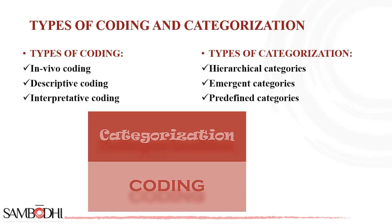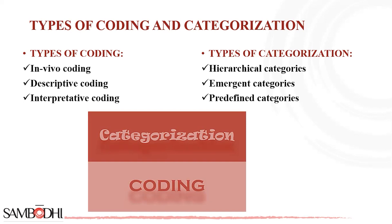Use interpretative coding when you want to understand subjective perspectives — if your research aims to capture the subjective perspectives, meanings and interpretations of participants. When emphasizing context and culture, this coding allows you to consider the broader social, cultural and historical context in which the data was collected, offering a deeper understanding of how these factors influence participants' perspectives. When developing new theories or concepts and your research is exploratory, interpretative coding allows for a flexible and creative approach.